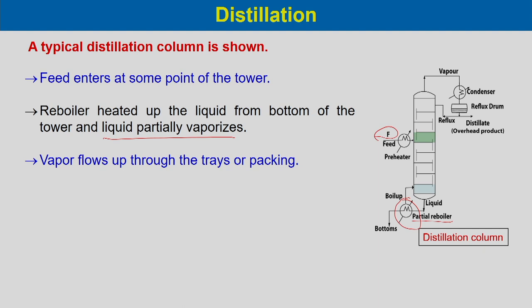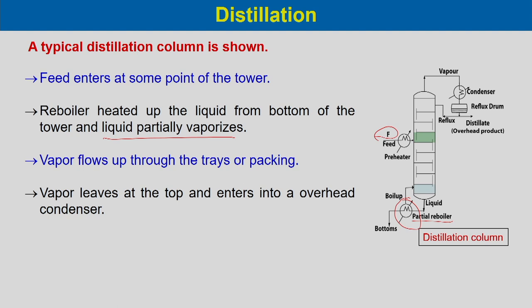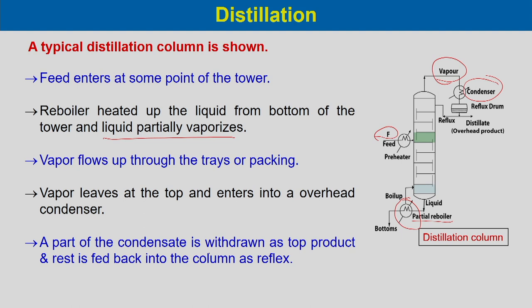Vapor flows up and leaves at the top, entering an overhead condenser. Once condensed, a part of the condensate is withdrawn as the top product and the rest is fed back into the column as reflux.